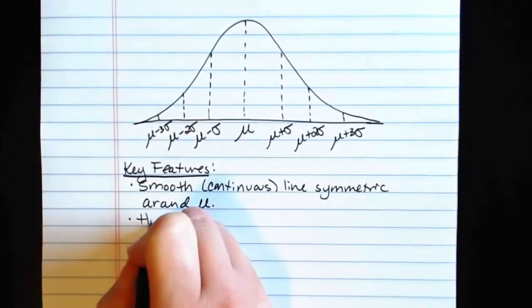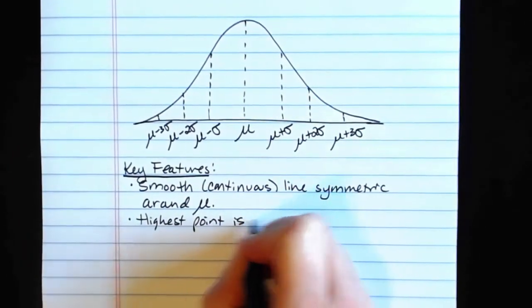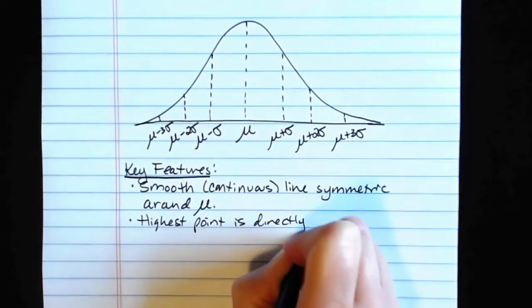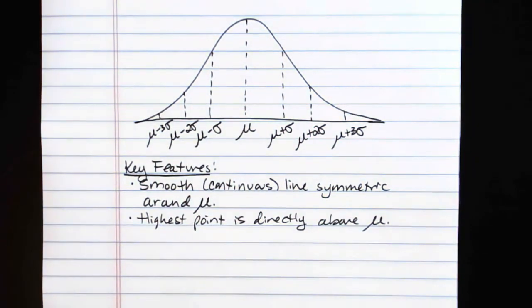The highest point is directly above mu. So directly above the value of the population mean.